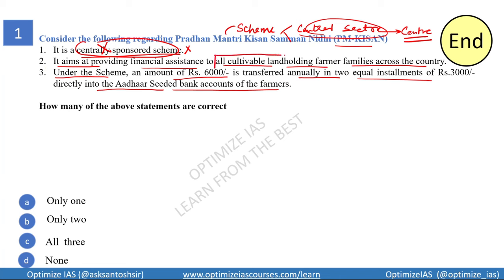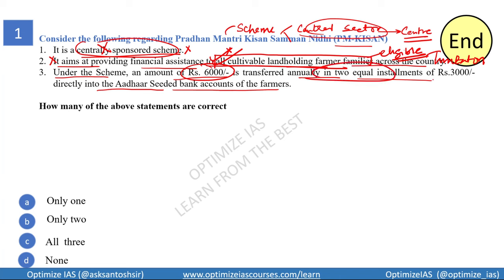Statement one is incorrect — PM Kisan is a central sector scheme, not centrally sponsored. Statement two is incorrect — not all farmers are eligible; there are limitations on who qualifies. Statement three is incorrect — the amount of 6,000 rupees is transferred in three equal installments of 2,000 each, not two installments of 3,000. So the answer is none of the above statements are correct.